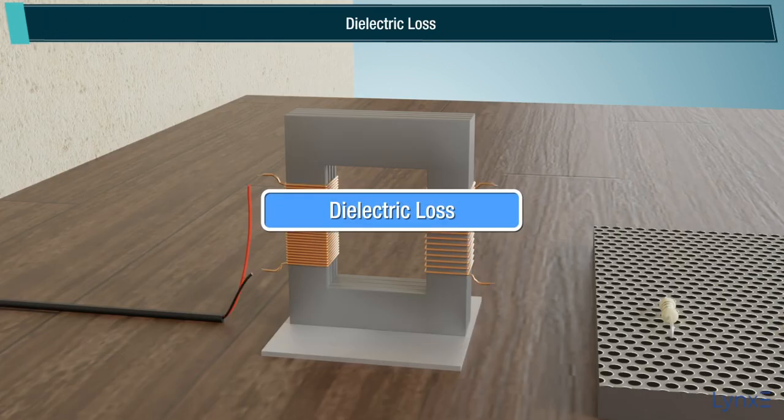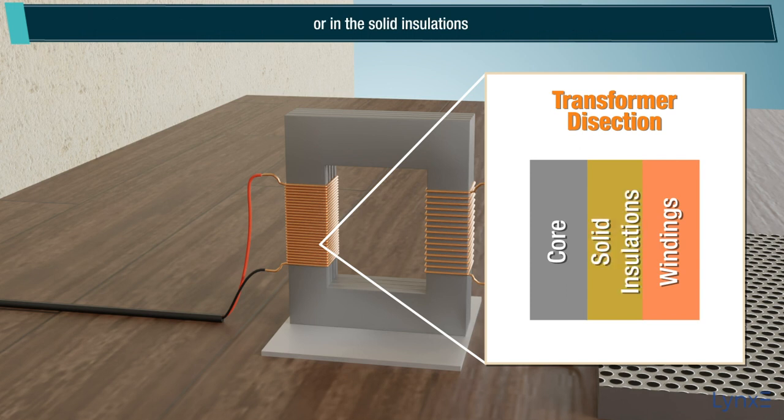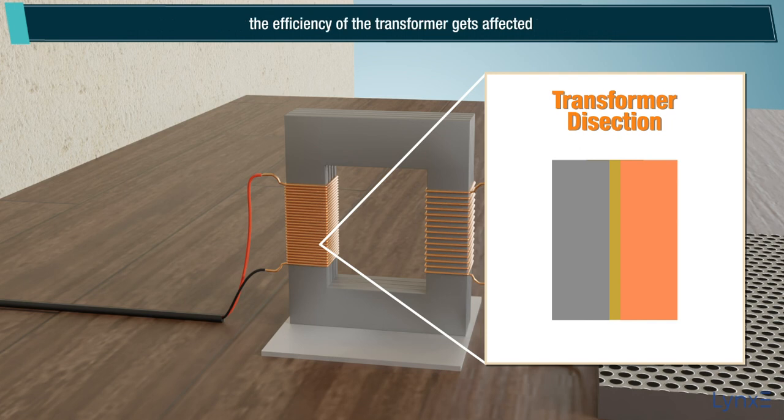Dielectric loss. Dielectric loss occurs in the insulating material of the transformer, that is in the oil of the transformer or in the solid insulations. When the oil gets deteriorated or the solid insulation gets damaged or its quality decreases, the efficiency of the transformer gets affected.